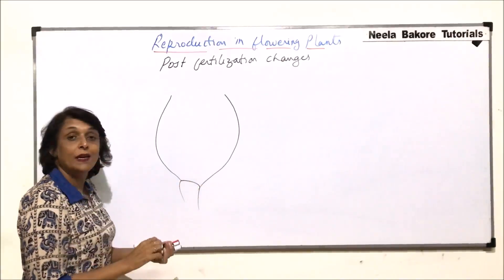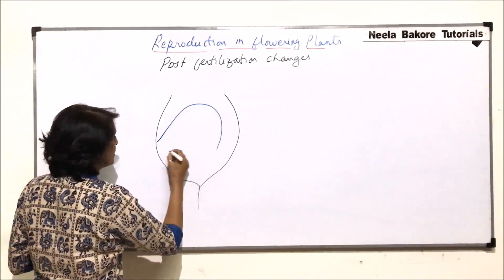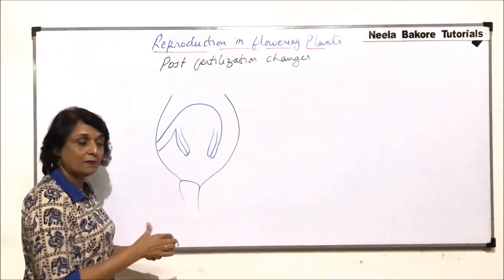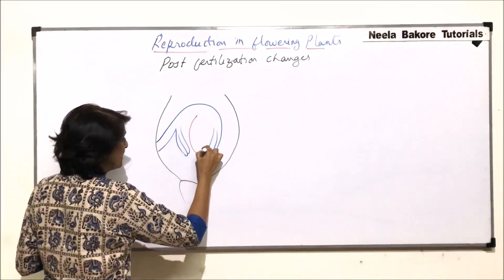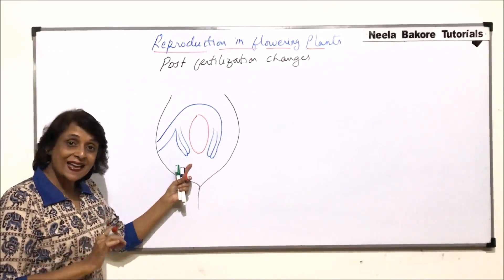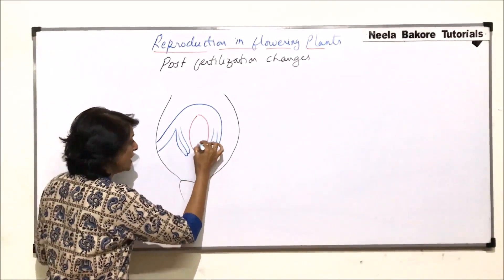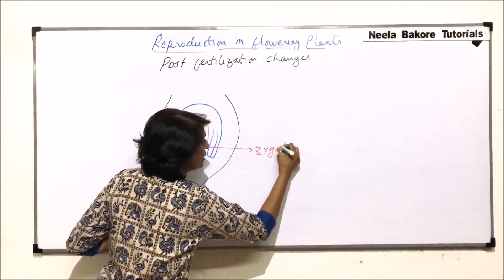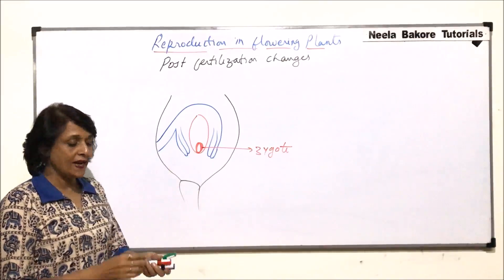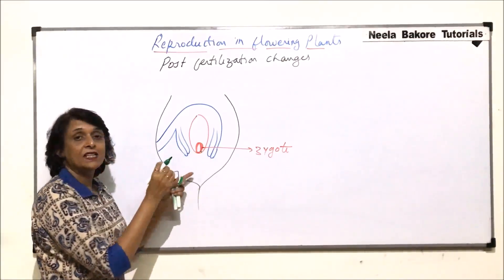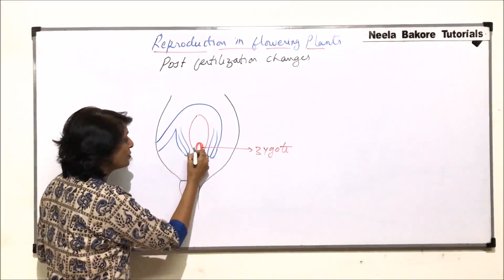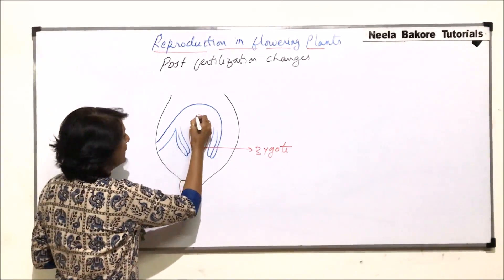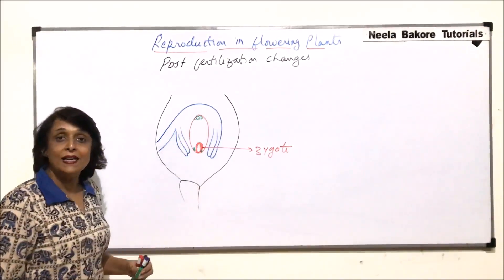Here is the ovary part, and in this ovary we have made one ovule in which fertilization has taken place. We made a bitegmic ovule, and in this bitegmic ovule there is an embryo sac. Since fertilization has taken place, the structure seen in the middle is actually the zygote. The zygote is formed by the fusion of one male gamete with the egg. There were two synergids — one degenerated at the time of entry of the pollen tube, and the other also starts to degenerate once its function is over.